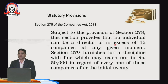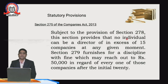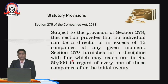Coming to Section 275, read with Section 278 of the Companies Act: if a director holds directorships in more than 15 companies, he would be liable under Section 279 and would be required to pay a penalty of Rs. 50,000 for every company in excess of that limit in which he serves as a director.